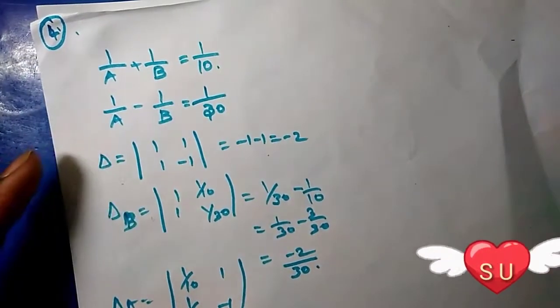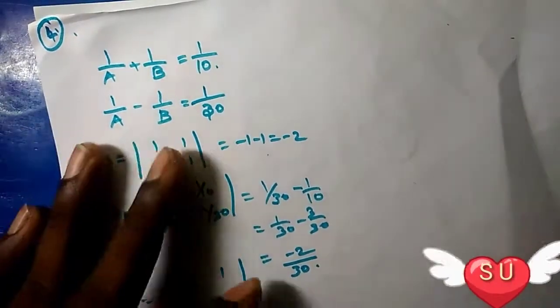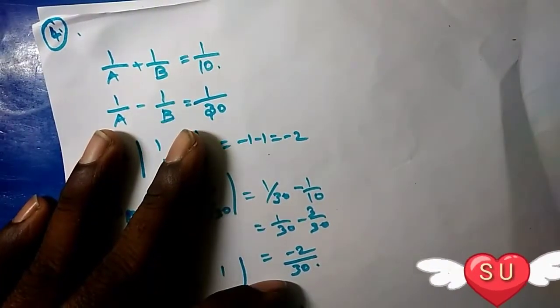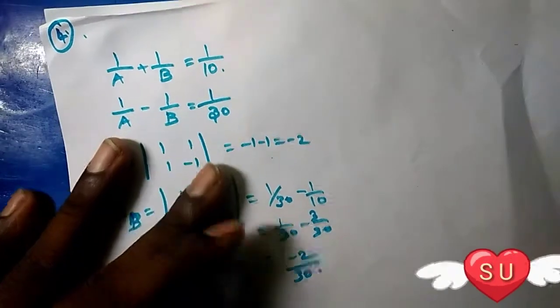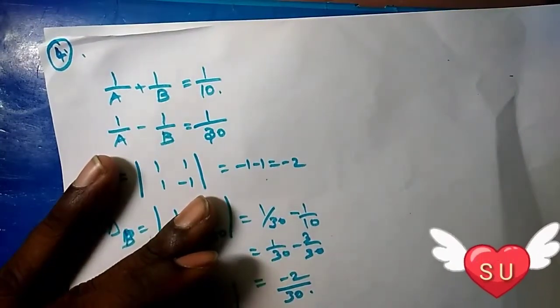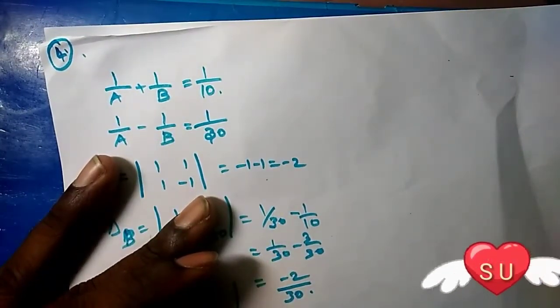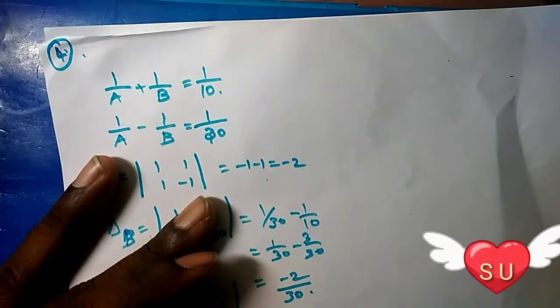That equals -3/30, so -4/30. Now we have del A and del B calculated.